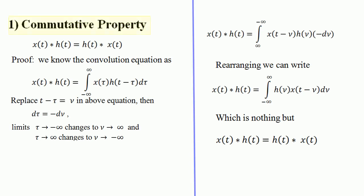In this video, let's see properties of convolution. The first is the commutative property. It states that x(t) convolved with h(t) equals h(t) convolved with x(t). Let's prove this. We know the convolution formula: x(t) convolved with h(t) equals the integral from minus infinity to infinity of x(τ) h(t − τ) dτ. Let's replace t − τ with μ.